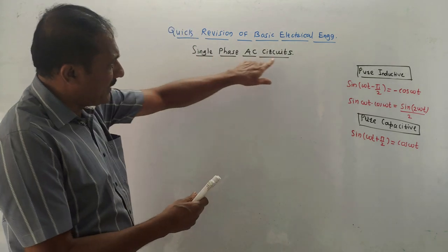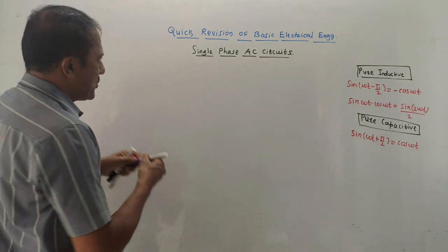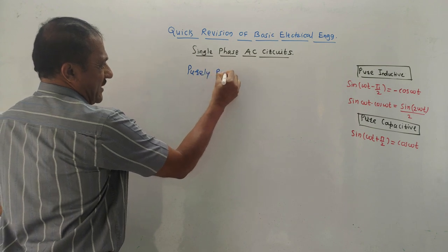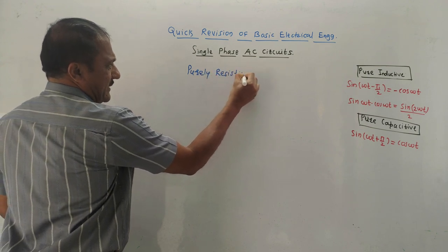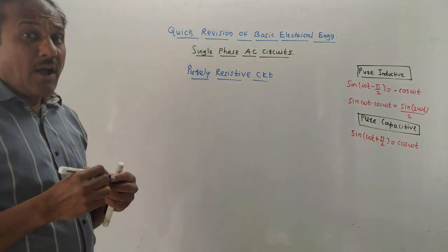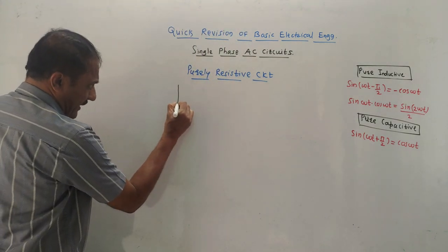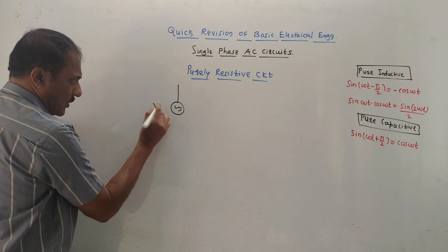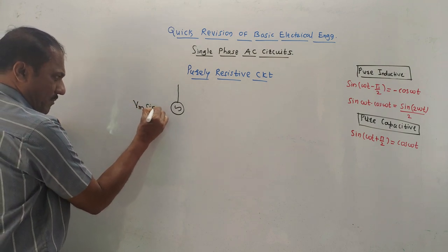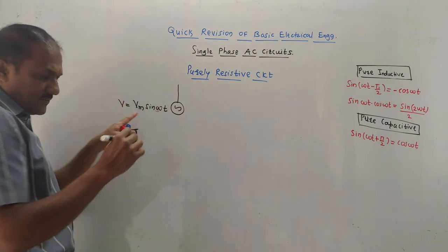The first topic is single-phase AC circuit. This chapter starts with the purely resistive circuit. As the name indicates, this circuit consists of only a single resistance. Drawing a diagram is pretty simple — show a voltage source somewhere. Throughout this unit, the equation of voltage is common: V = Vm sin(ωt), where Vm is known as maximum voltage.